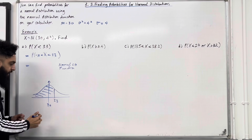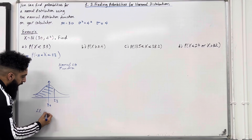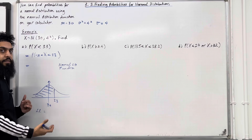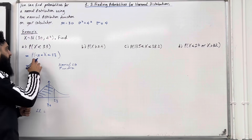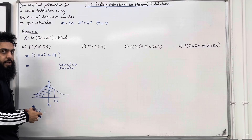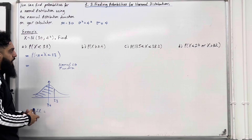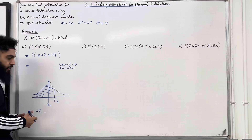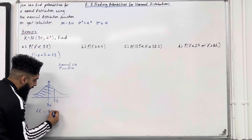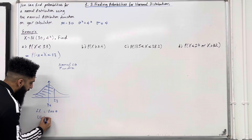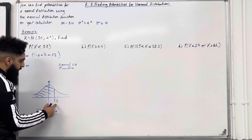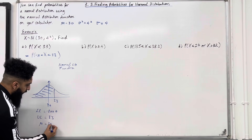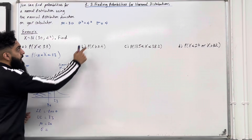From this bell-shaped curve, we see that the lower limit has to equal minus infinity. But minus infinity is undefined, so we have to select a suitable number as a substitution. It will be a three-digit number far smaller than 33 — that will be minus 1,000. So the lower limit is minus 1,000. The upper limit is just 33. The mean mu is equal to 30, and the standard deviation sigma is equal to 4.